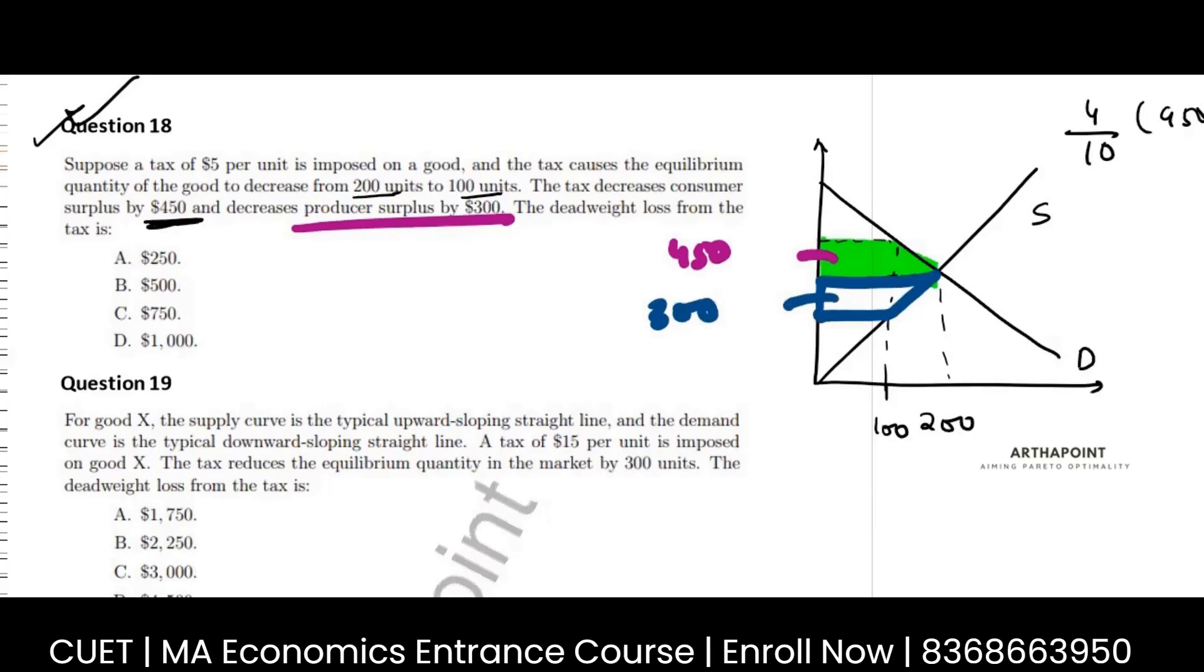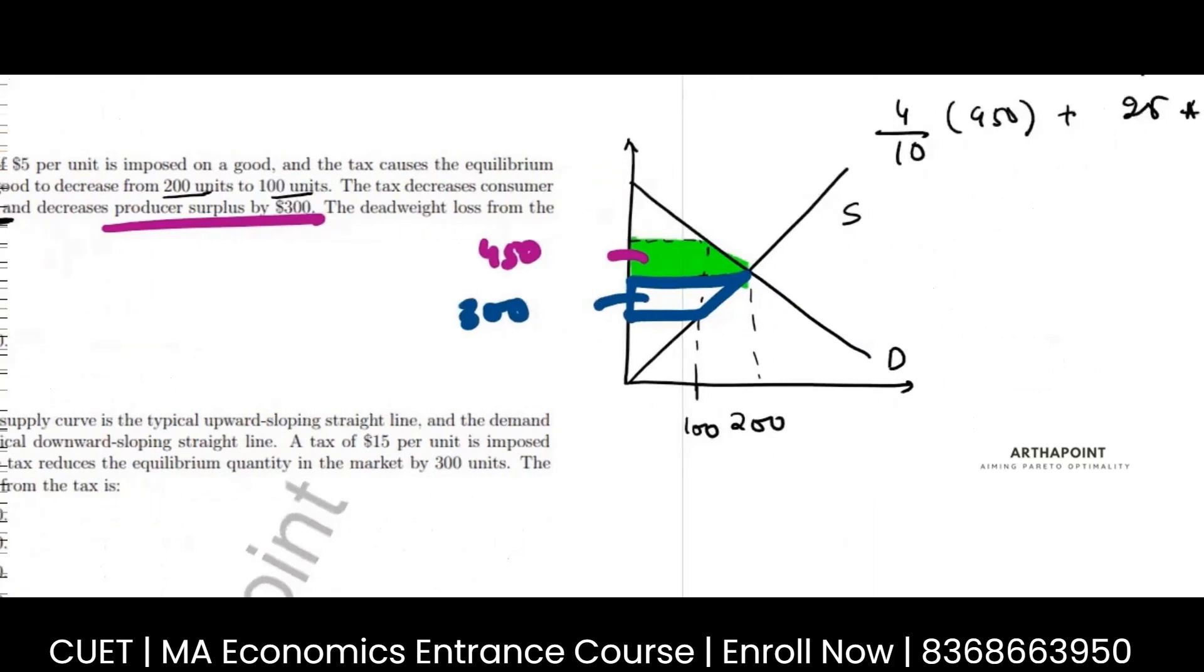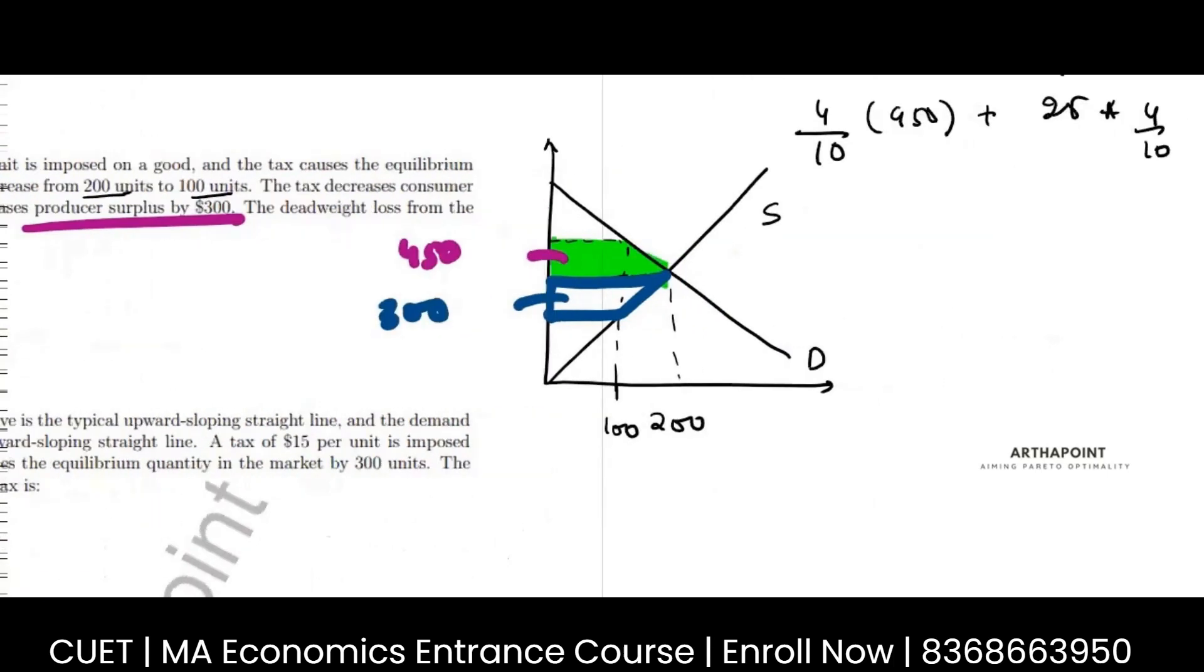Deadweight loss from the taxes. Now just see here. I know that the deadweight loss is the triangle that is formulated. So I know that my deadweight loss is this. This triangle. I am not given this.